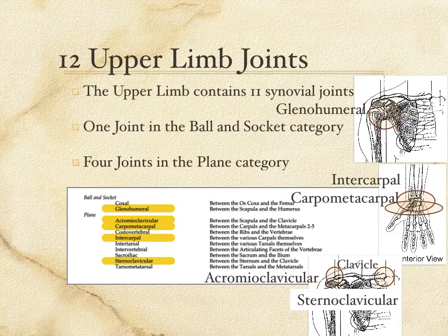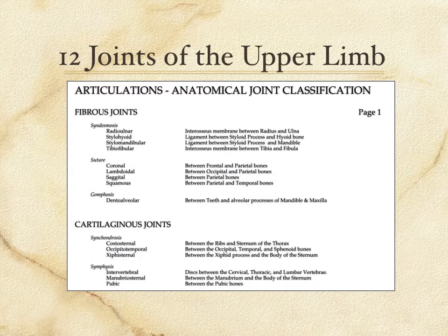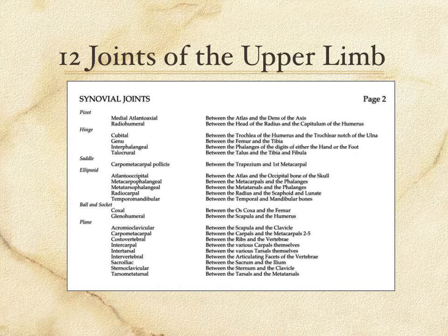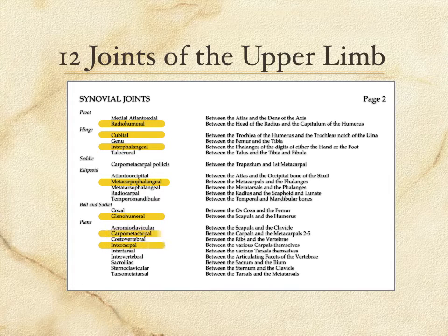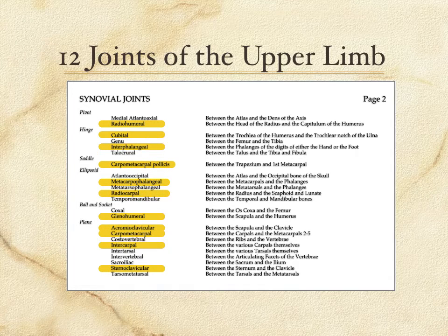So there are the twelve upper limb joints. One in the fibrous category — the radial ulnar — and eleven synovial joints: one pivot, two hinge, one saddle, two ellipsoid, one ball and socket, and four plane joints.